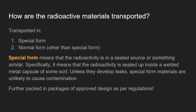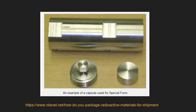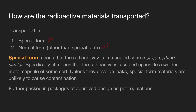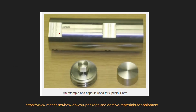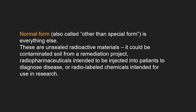Radioactive materials are transported in two different forms. Special form means the radioactivity is sealed inside a welded metal capsule, and these are further packed in packages of approved design as per regulation. Normal form — also called 'other than special form' — refers to everything else: unsealed radioactive materials, which could be soil from a remediation project, radiopharmaceuticals engineered for therapy or diagnosis, or radiolabeled chemicals for research.